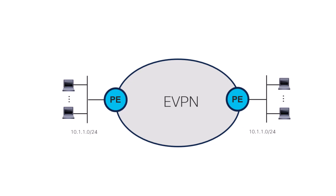To illustrate the first pitfall, let's use this very simple topology where we have two single home sites. Since we use Distributed Anycast Gateway, each EVPN PE is configured with a BVI, and the BVI on all PEs is configured to the same IP and MAC address. In this example, with IP address 10.1.1.1 and the MAC address 1.1.1.1.